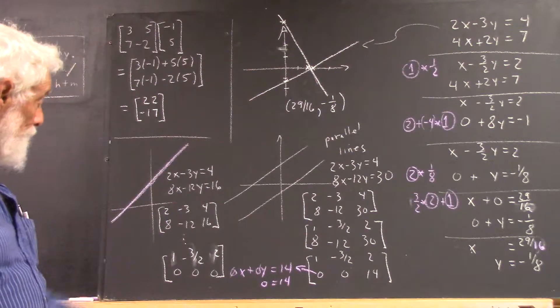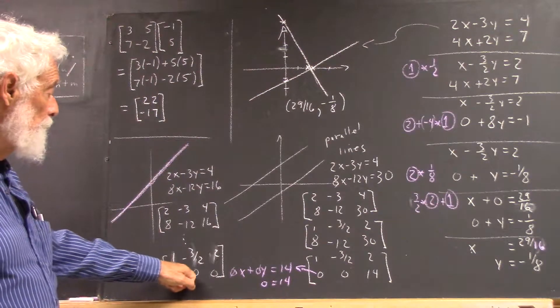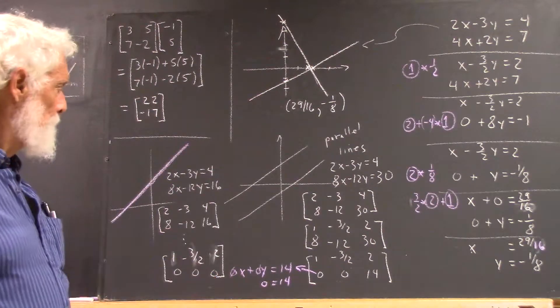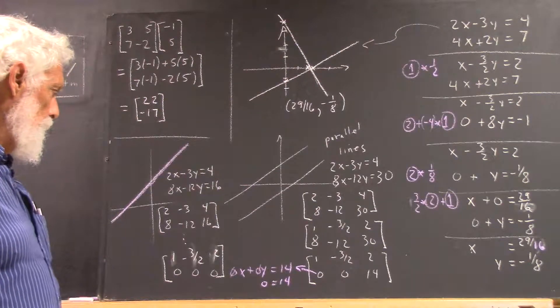If I go through the same steps, my second equation becomes 0, 0, 0. Okay, well, what happened?